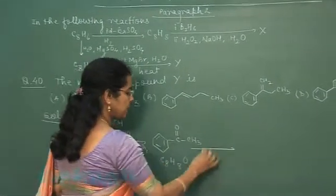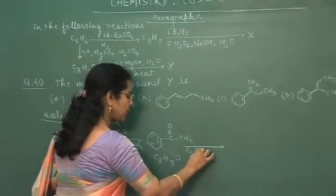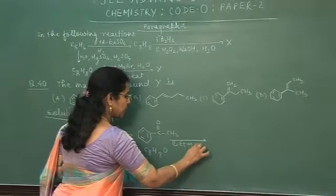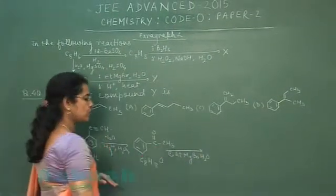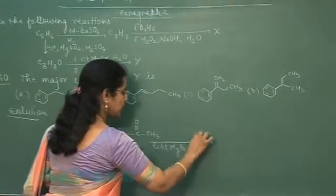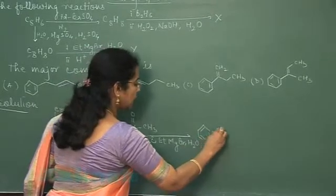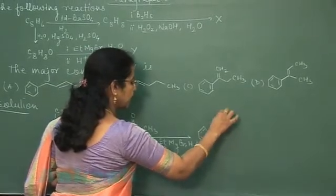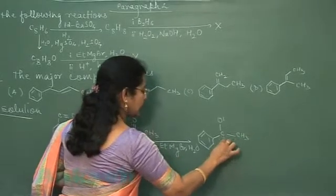This is C8H8O. When this compound is treated with ethyl-magnesium-bromide, magnesium-bromide and H2O, this is first step of the reaction. Reaction of Grignard reagent at carbonyl-carbon atom. Ethyl group, CH2, CH3.